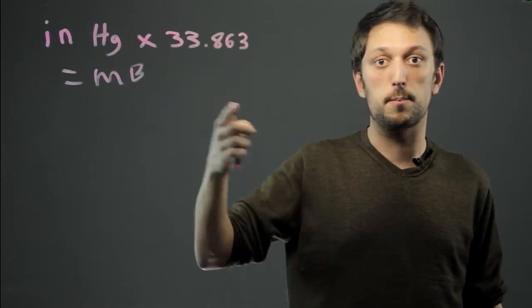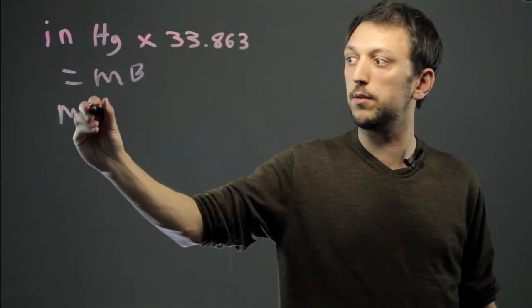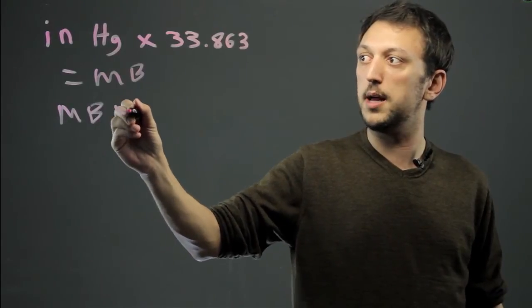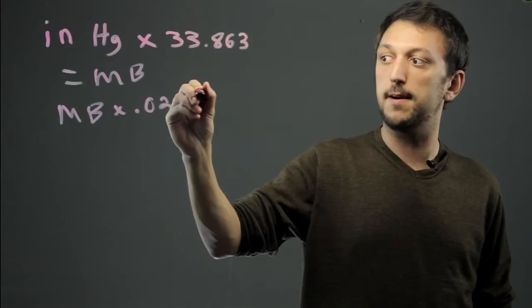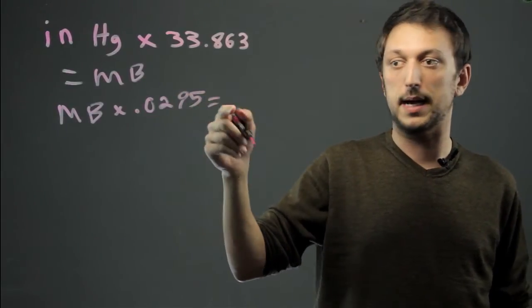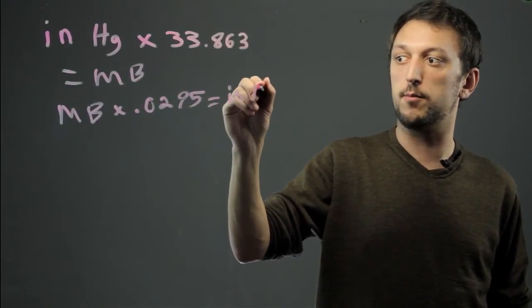Now, if we'd like to convert back, we can take the millibars and we can multiply by 0.0295. And that will get us back to inches of mercury.